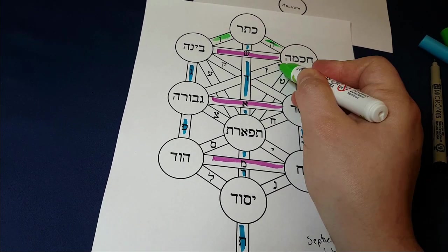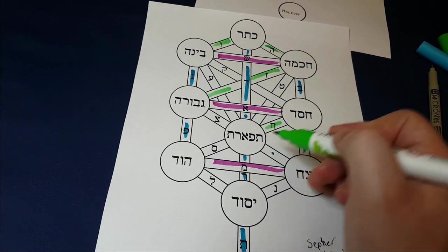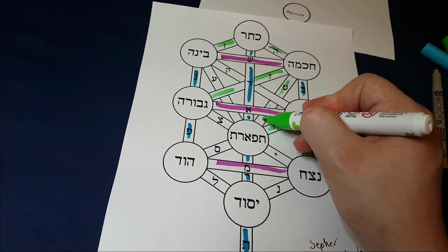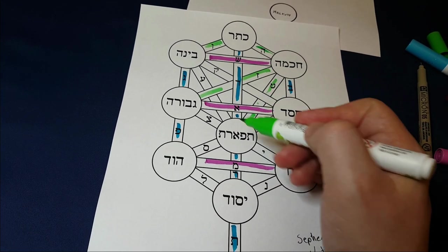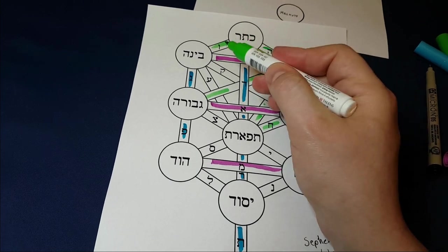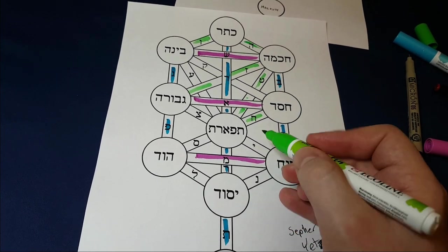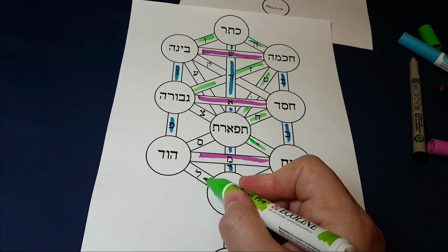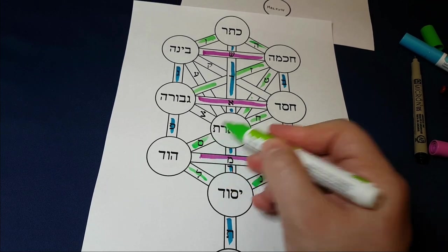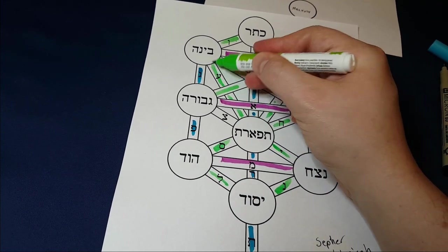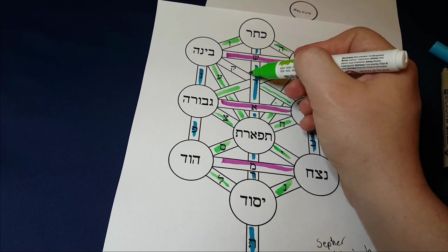And over here, we've got the single letters, and there are 12 of those. One, two, three, four, five. All right, so it's all the diagonal ones. You'll notice that I'm doing them in a weird order. That's because that's the order that the letters of the Hebrew alphabet appear.